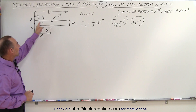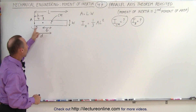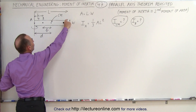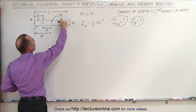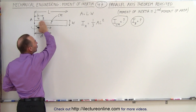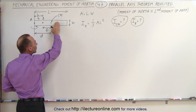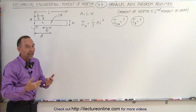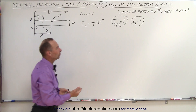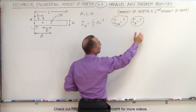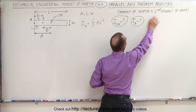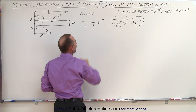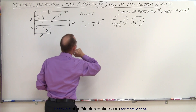We're going to start off with a simple long object that has length L and width W. Since we don't know the mass, we're going to utilize the area to find the moment of inertia — so we call it the second moment of area. We can call them equivalent to one another simply by replacing M by A, the mass by the area.